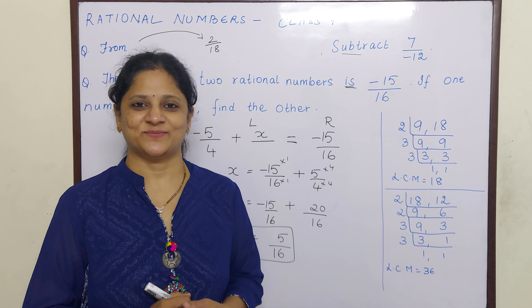And this is your final answer. Okay children, now you understood how to do it step by step. So now let us go to the next sum. The sum of 2 rational numbers is minus 15 by 16. If one number is 5 by minus 4, find the other. Here they have given the sum of 2 rational numbers, so when we add these 2 rational numbers the answer is equal to minus 15 by 16. One number is 5 by minus 4, and we don't know what the other number is, so we will make it as x.